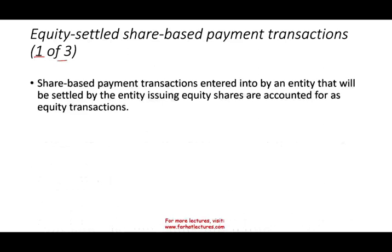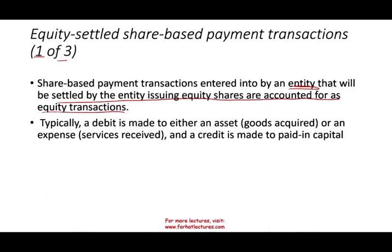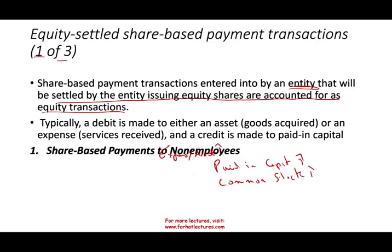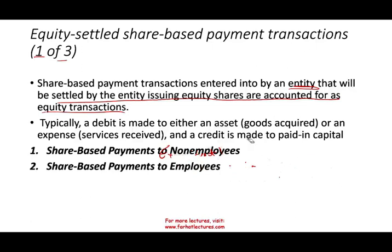An equity-settled share-based payment transaction — entered into by an entity that will be settled by the entity issuing equity — is accounted for as an equity transaction. Typically we debit either an asset or an expense depending on what we obtained, and we credit some sort of paid-in capital and common stock. We issued stocks for something — either an expense or an asset. Now we must differentiate between equity-settled share-based payment to employees versus non-employees, as they are treated differently.